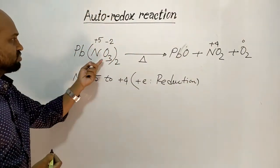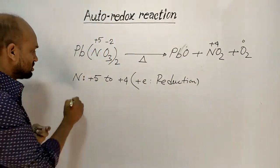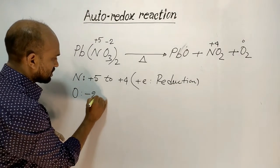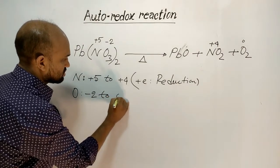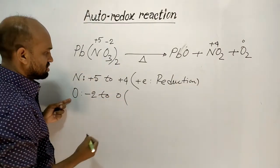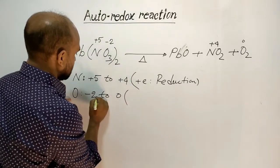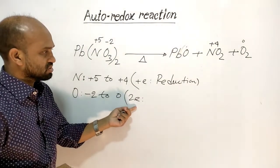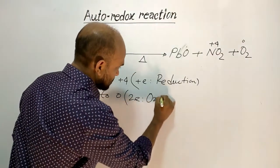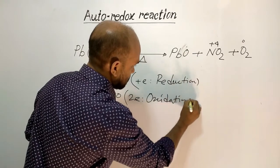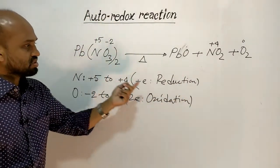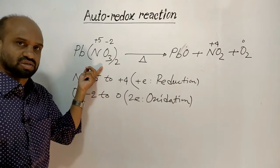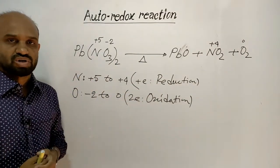Another element of the reactant molecule, oxygen, has its oxidation number changed from -2 to 0. That means oxygen donated two electrons, and donation of electrons means oxidation. So this is a reaction in which oxidation and reduction both happen, making it a redox reaction. But specifically, it is a kind of autoredox reaction.